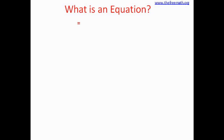Let's see what an equation is. We know what this sign is — this is an equal sign. That means whatever is on the left side of this sign is equal to whatever is on the right hand side. An equation shows that the number or the expression on the left is equal to the number or the expression on the right.